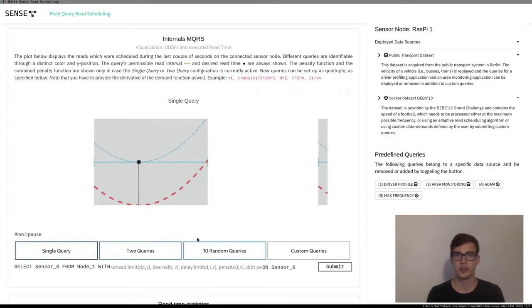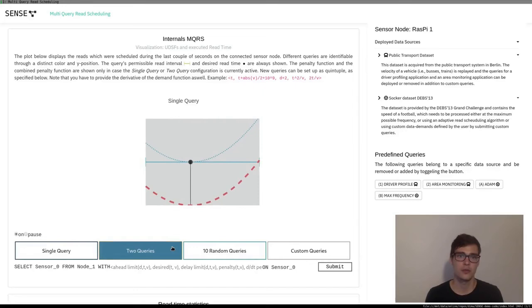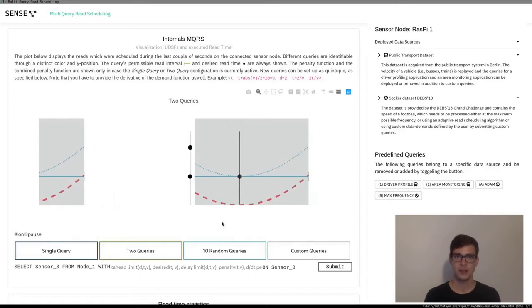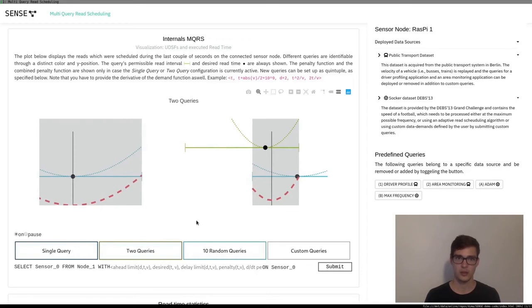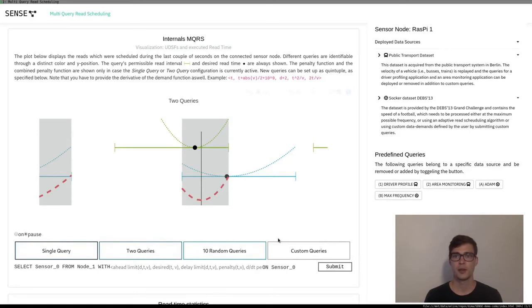As only a single query is currently running, we only benefit from the data demand-aware scheduling of the next read time, but we do not profit from fusing reads. So let's add a second query with a similar penalty function. In this scenario, the overlapping time frame is the optimal fragment. The cumulative penalty function is defined on this fragment, which we depict in red at the bottom of the visualization. The system optimizes that function and performs a read on the optimal fragment.